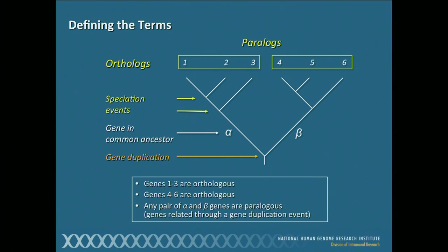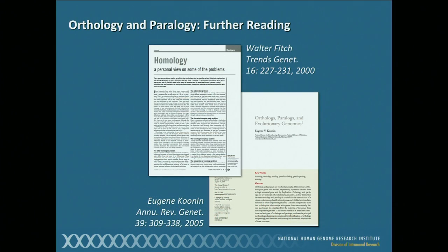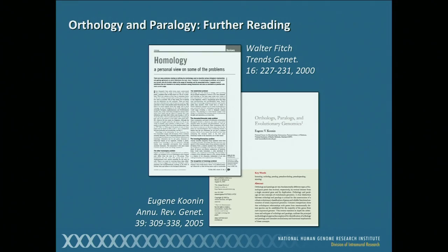This admittedly can be confusing. I remember when I was starting out, I had a diagram like this over my desk — I would recommend you do the same. To make things even more complicated, there are subdefinitions of each of these. I refer you to two papers: the Walter Fitch paper where the pregnancy quote came from, and a very nice review by Eugene Koonin on orthologs, paralogs, and evolutionary genomics, for those of you who want to delve a bit deeper.